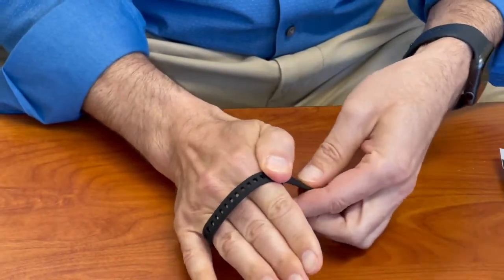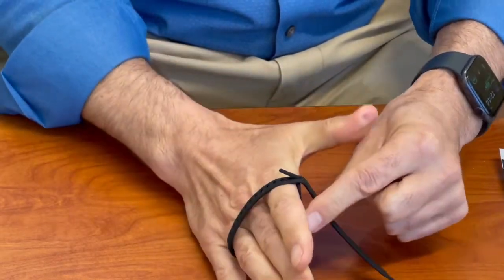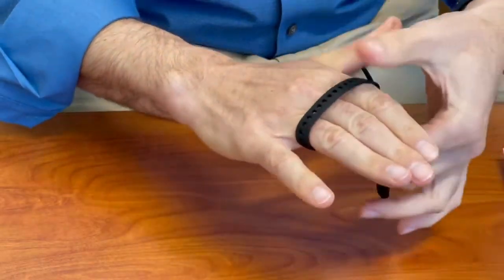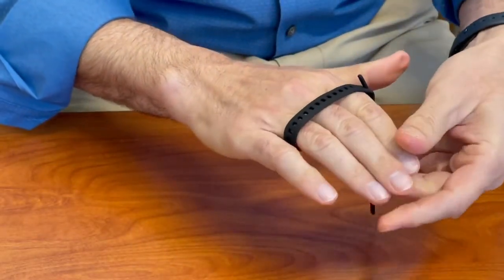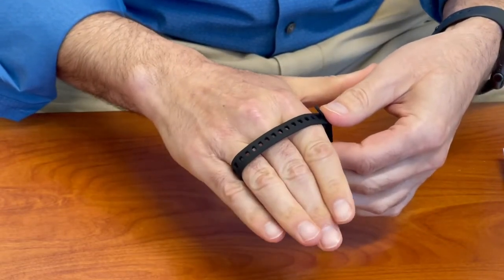And then to test and make sure that this sizing is correct, you can slightly bend the tab and just have the patient go through some range of motion and make sure you're not too tight, not too loose, you allow a little bit of play there.